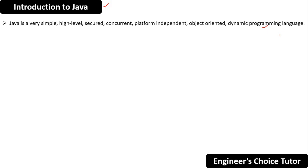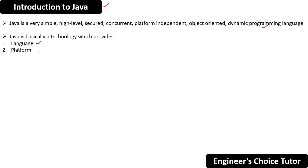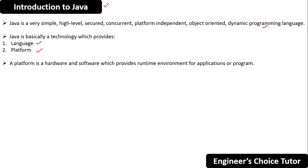Java is basically a technology which provides two things: it provides a language and it provides a platform. So Java is a technology which provides a language as well as a platform. You should know what a platform is — a platform is a hardware and software environment which provides a runtime environment for applications or programs.